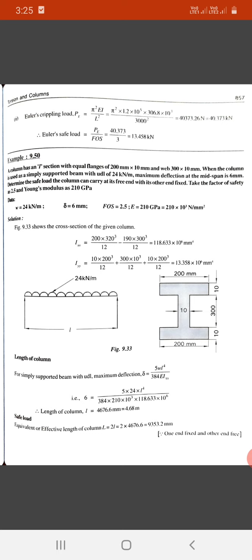Example 9.50: A column has an I-section with equal flanges of 200 into 10 and web of 300 into 10 mm. When the column is used as a simply supported beam with a UDL of 24 kilonewton per meter, the maximum deflection at the mid-span is 6 mm.